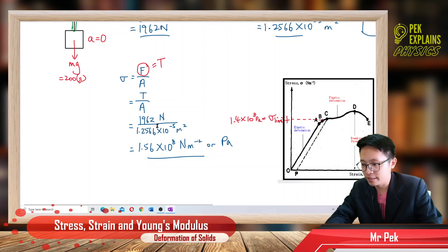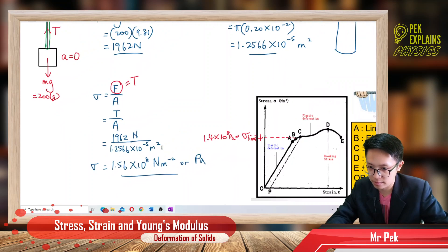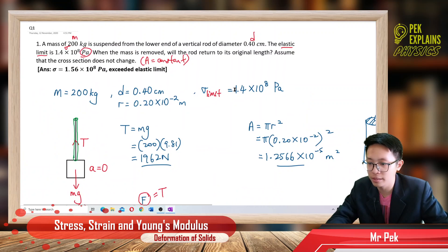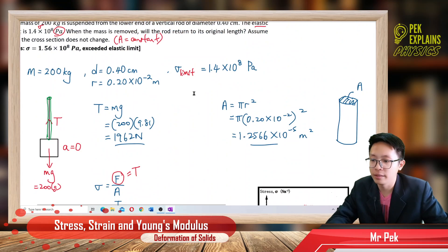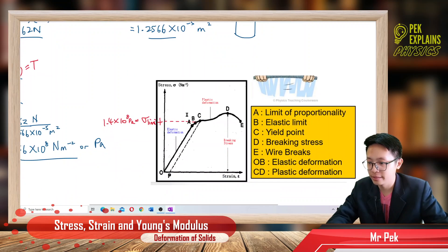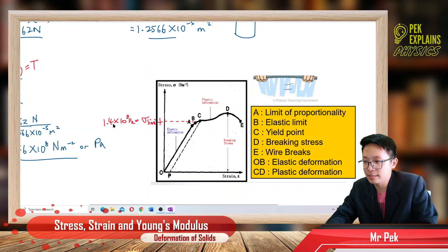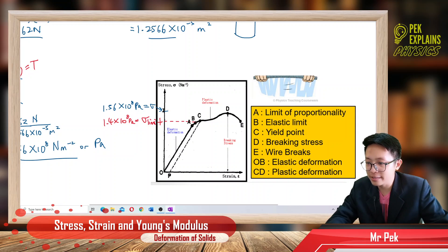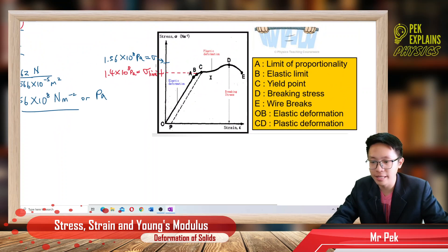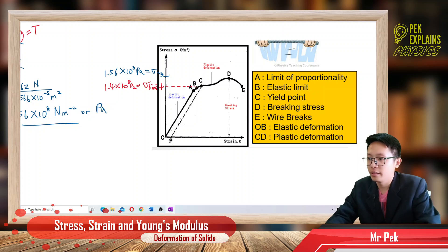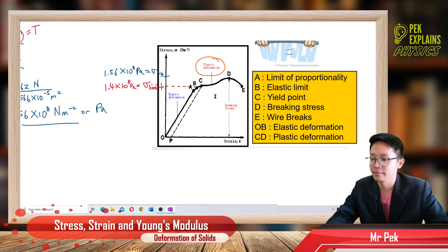Is this stress over the elastic limit? The elastic limit stress is 1.4 × 10⁸ pascal. The stress experienced is 1.56 × 10⁸ pascal. The stress is above the limit — it is over the elastic limit. So the rod cannot return to its original length; it will undergo plastic deformation.